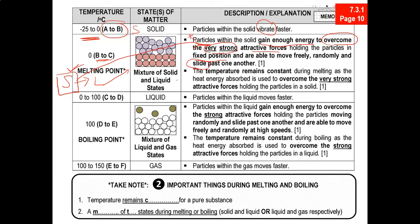You are continuously heating the substance — why does the temperature remain constant? The temperature remains constant during melting because the heat energy you supply is being absorbed to overcome the very strong attractive forces in the solid. Once the attractive forces are overcome, the particles start to be able to move freely and randomly and slide past one another.